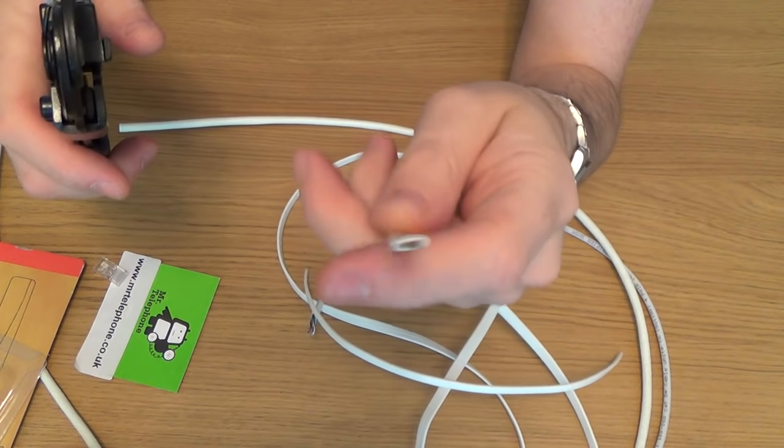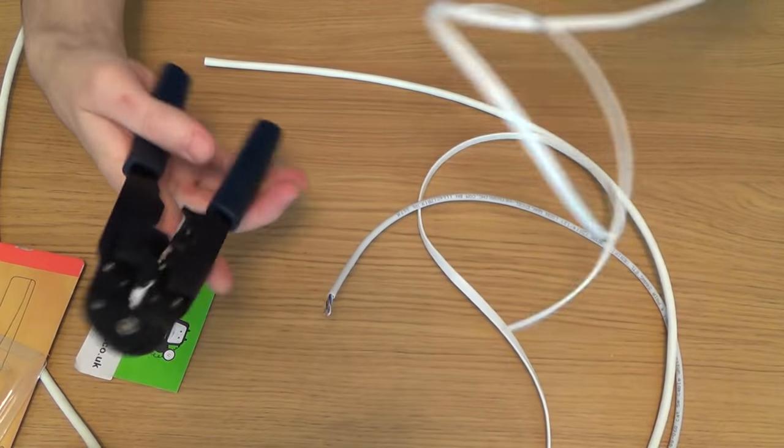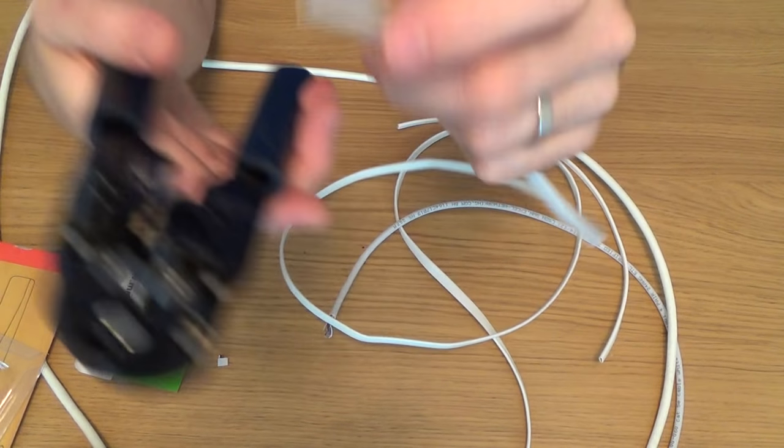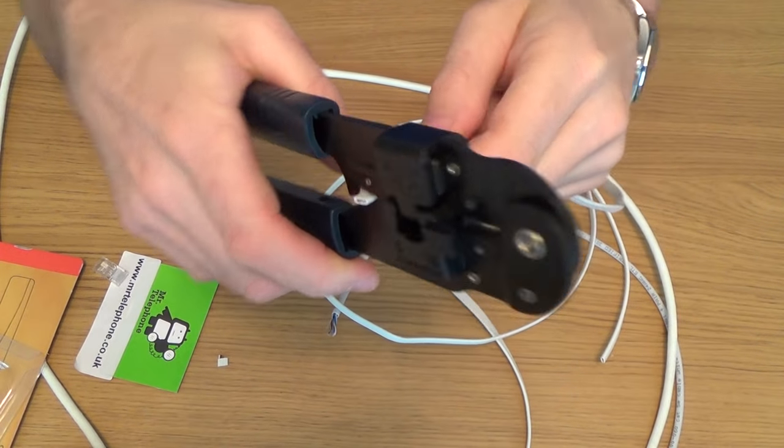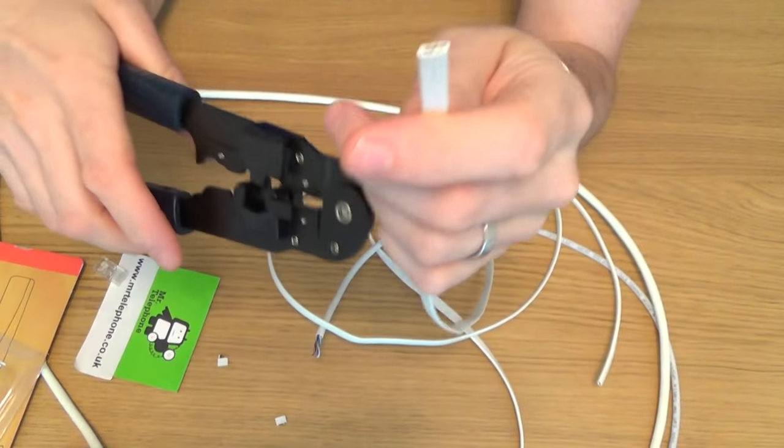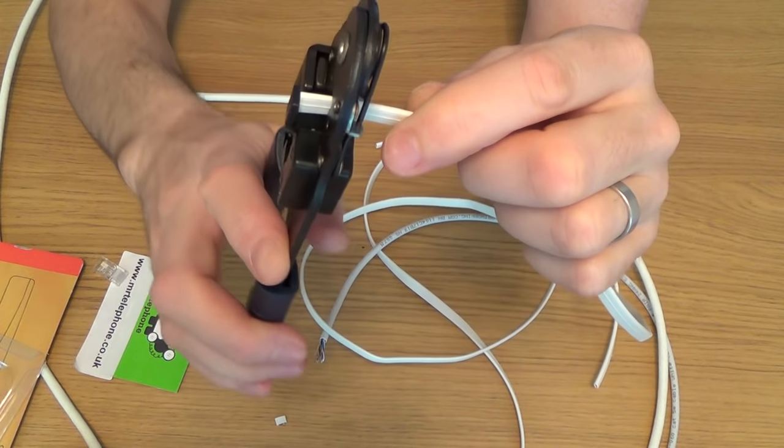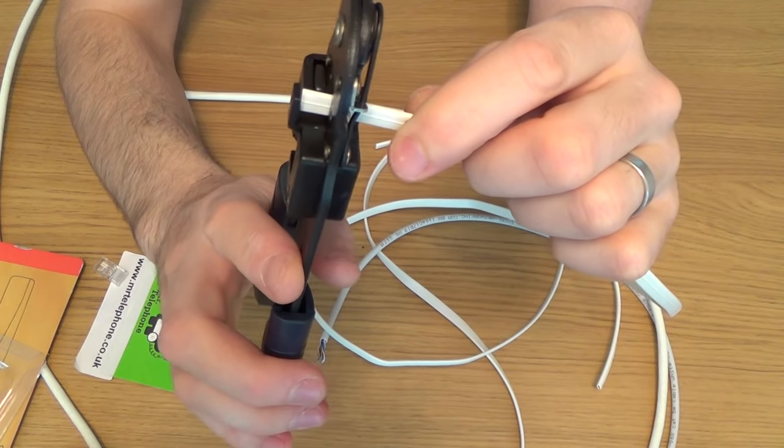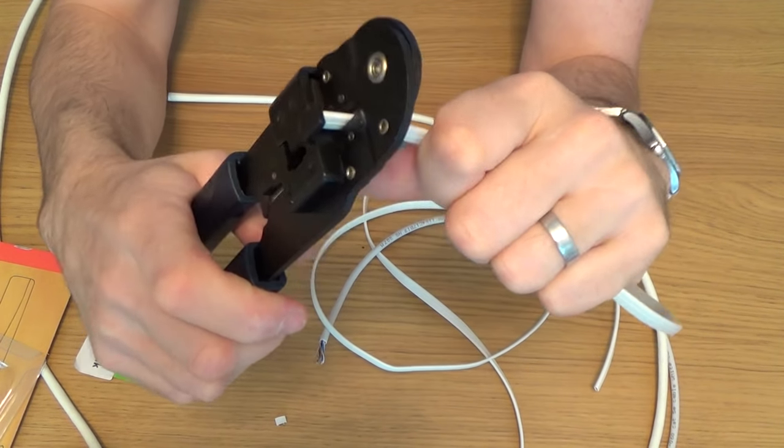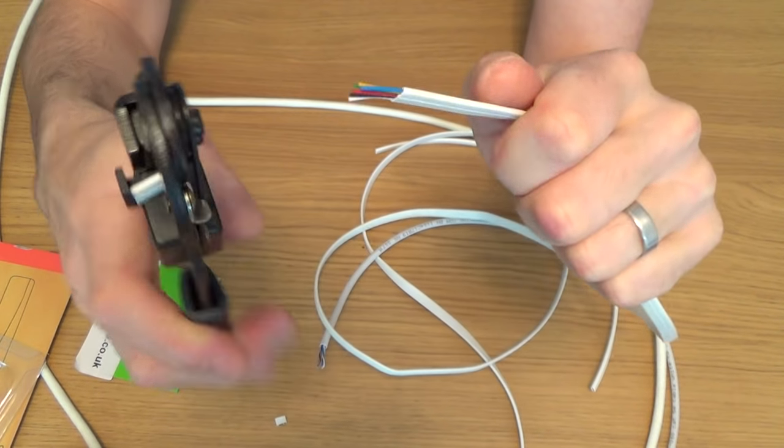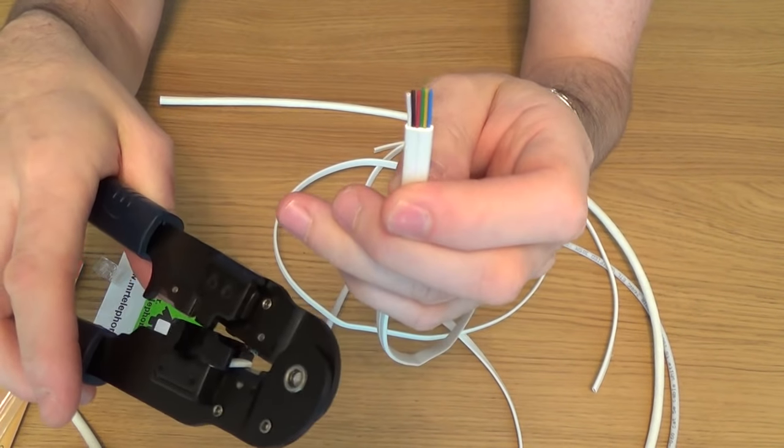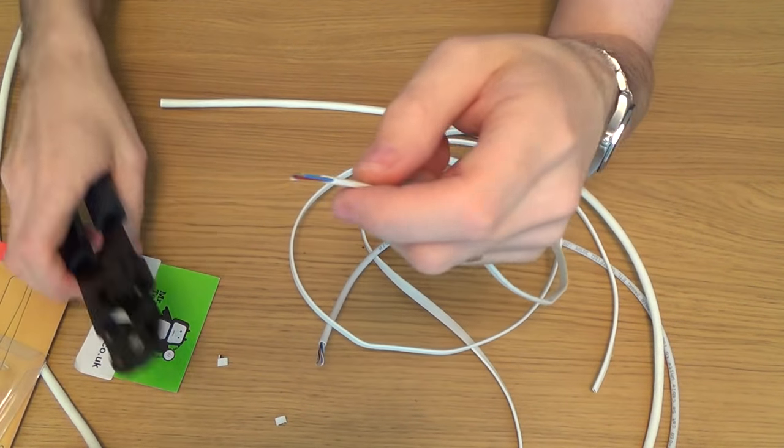So this is 6-core flat cable, and all you do is, to begin with, let's say we get a nice straight line there by using this bit here, so we get a nice straight edge. And then we push it through here, up to the stop. Now there's a stop there. So we push it all the way to the stop, and then down, and basically pull out.